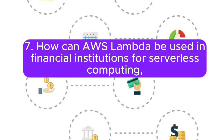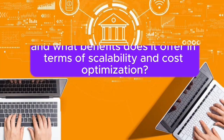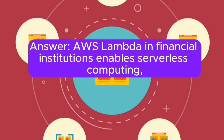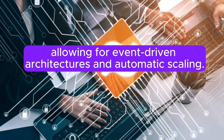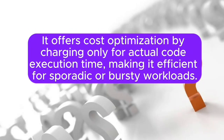Question 7: How can AWS Lambda be used in financial institutions for serverless computing, and what benefits does it offer in terms of scalability and cost optimization? Answer: AWS Lambda in financial institutions enables serverless computing, allowing for event-driven architectures and automatic scaling. It offers cost optimization by charging only for actual code execution time, making it efficient for sporadic or bursty workloads.